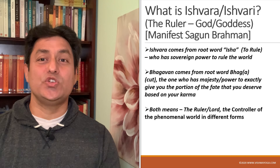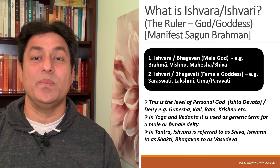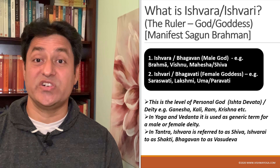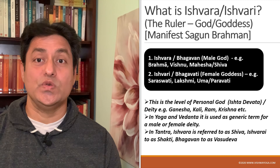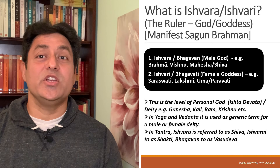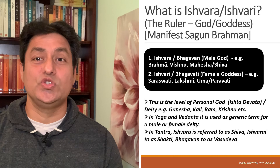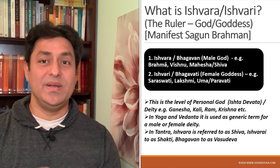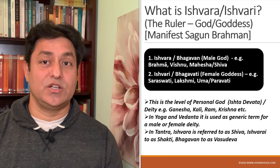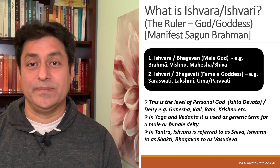The term Ishwara and Bhagavan is generally used with male deities — for example, the male trinity: Brahma, Vishnu and Mahesh or Shiva. The term Ishwari and Bhagavati is generally used with female deities — for example, the female trinity: Saraswati, Lakshmi, Uma or Parvati.